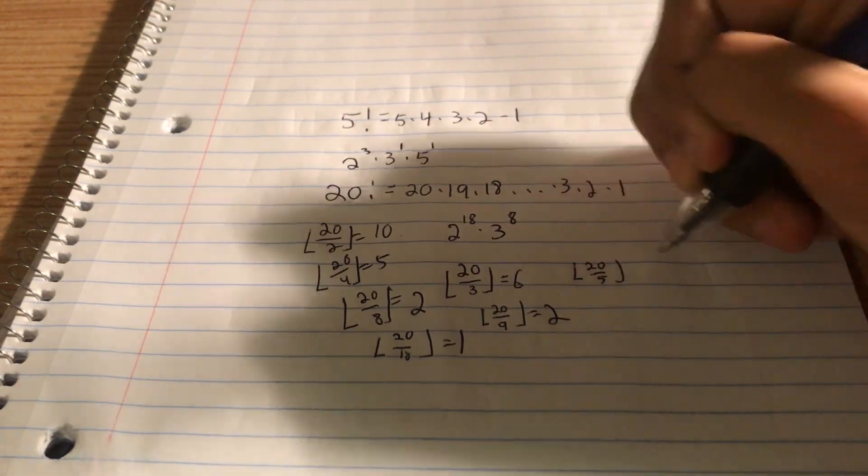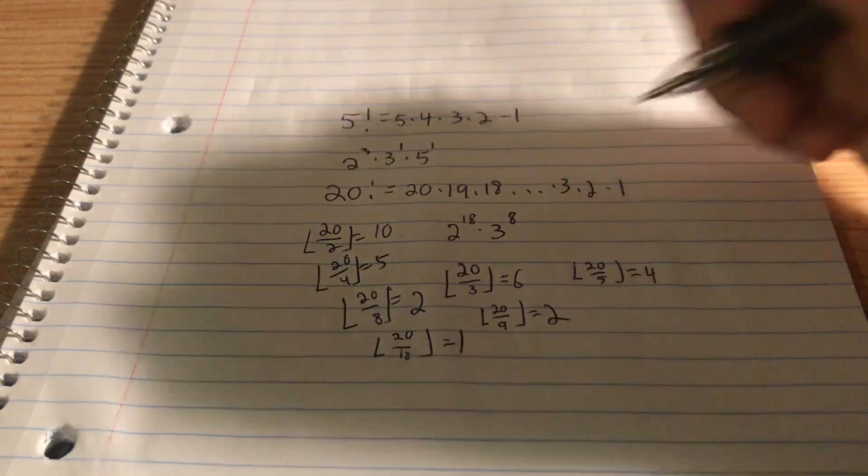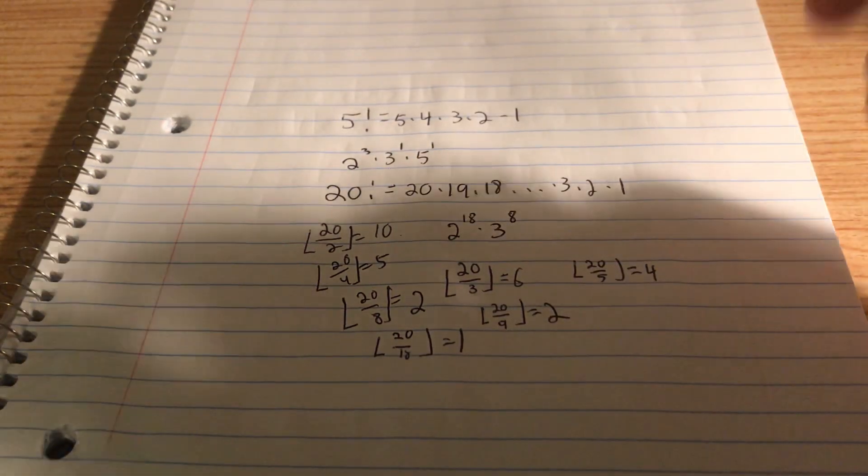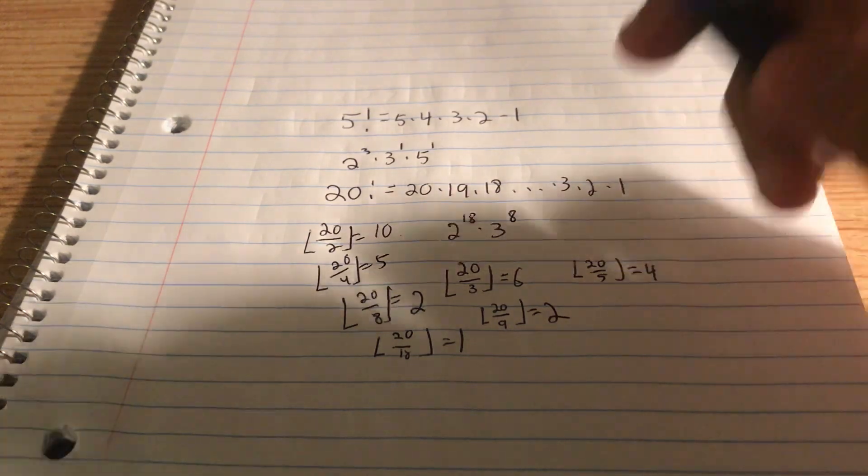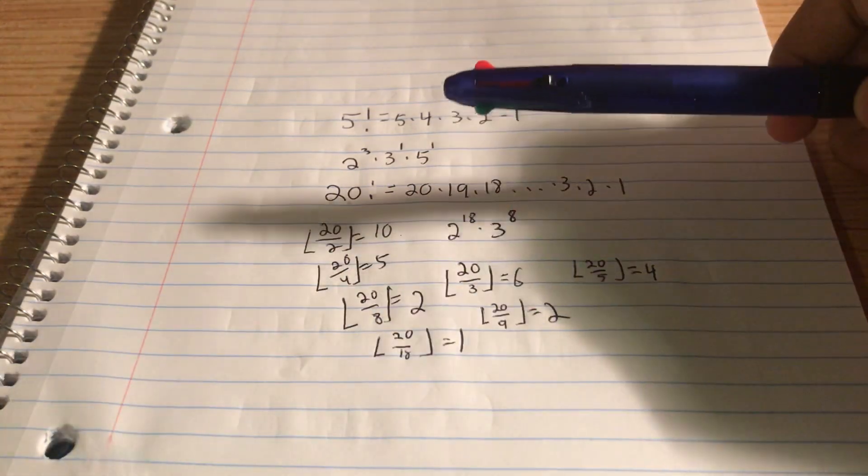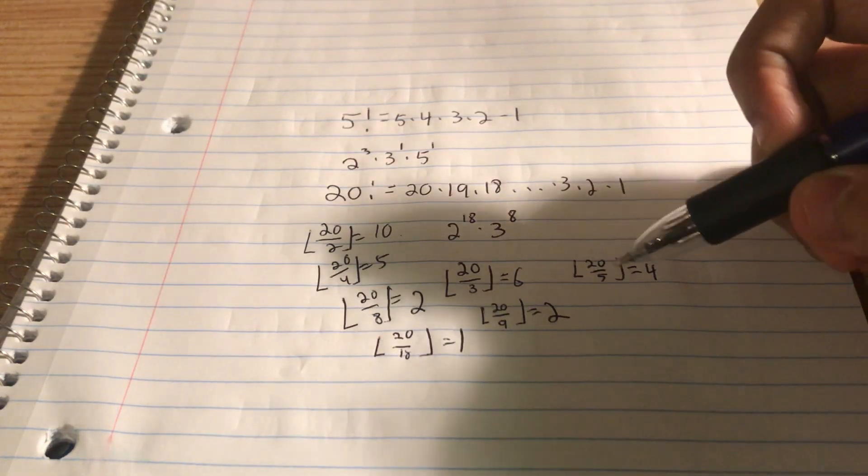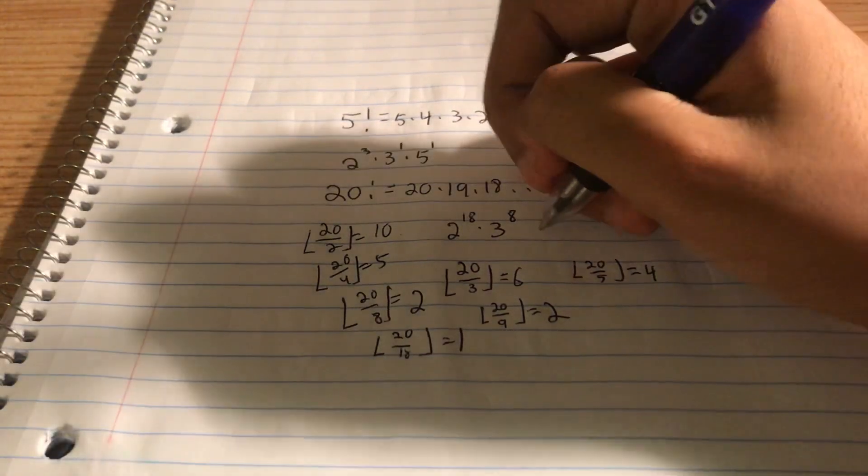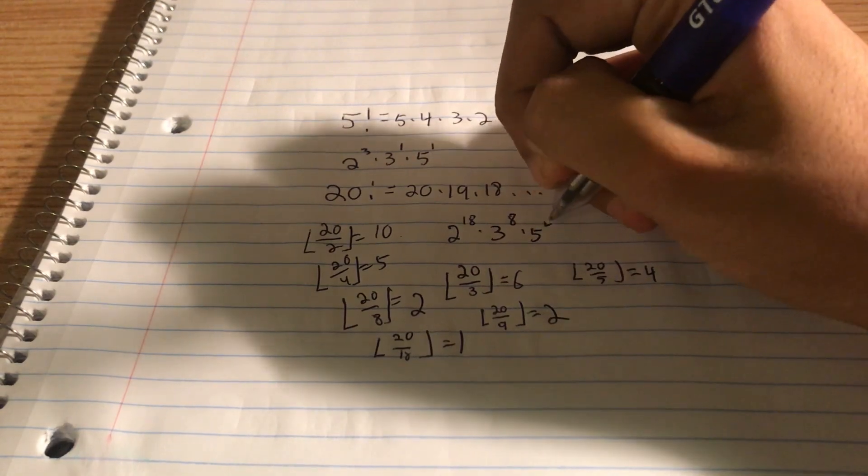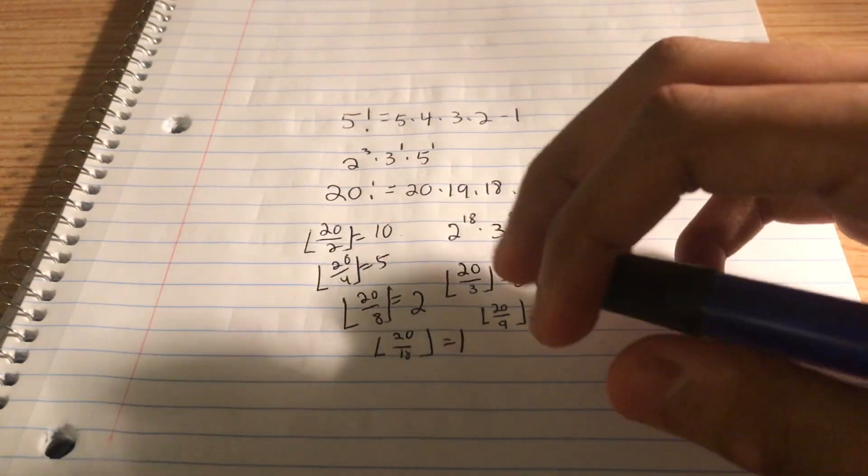20 divided by 5 is equal to 4. So there's at least 4 powers of 5. Now, what about 5 squared? Well, 5 squared is 25. And 25 is bigger than 20. So we don't have to go any more than this. We know that there are only 4 powers of 5.